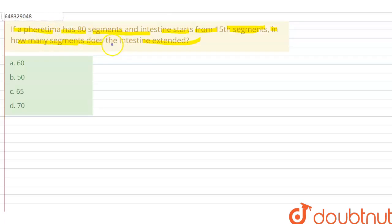The pheretima or earthworm has 80 segments, and intestines start from the 15th segment. In how many segments does the intestine extend? The pheretima has 80 segments.